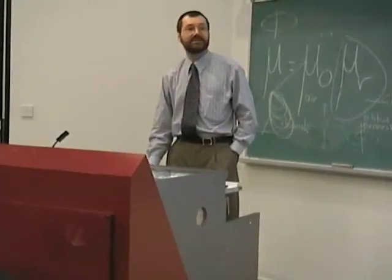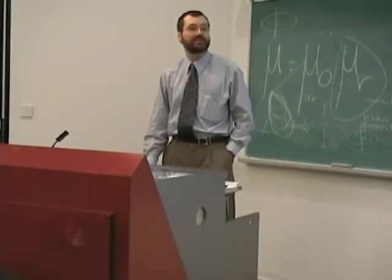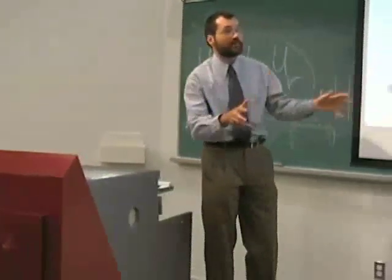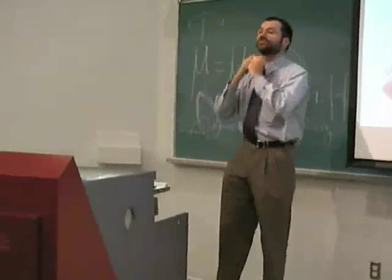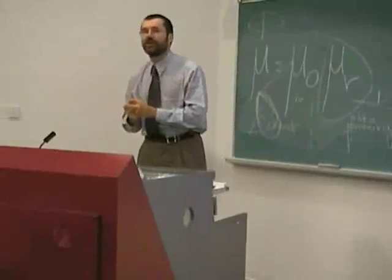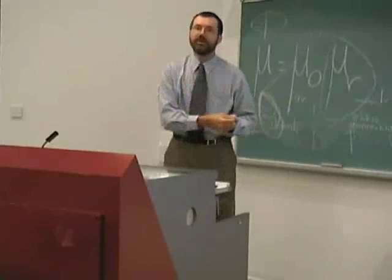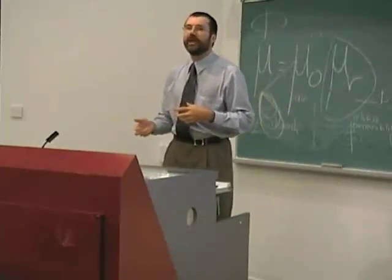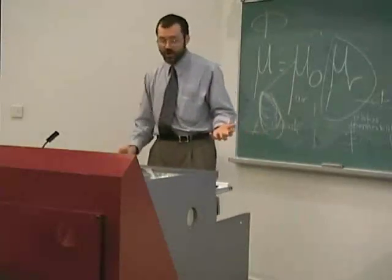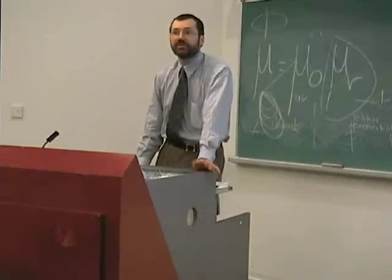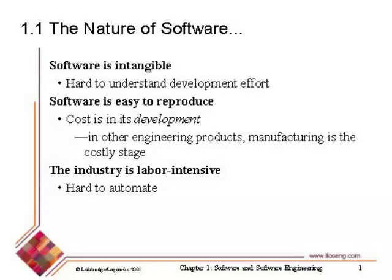The cost of software is in its development — in the requirements process, the design process, the testing process. The cost of hardware, by contrast, has a big portion in raw materials and the labor for actually constructing devices once they've been designed. This shifts costs to the design phase in software and makes project management and managing the design process dominant in software engineering, much less so in other branches. Because all the work goes into requirements, design, programming, and testing — done by humans — the software industry is labor-intensive. We don't have robots yet that can program computers.